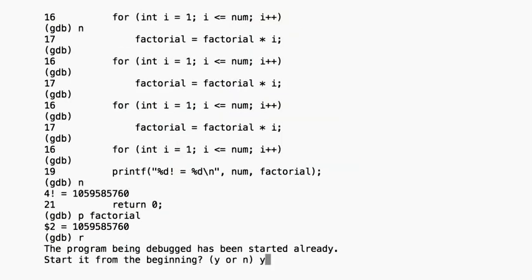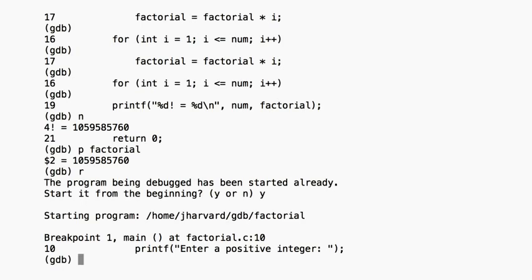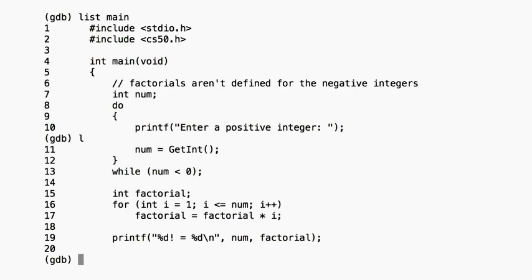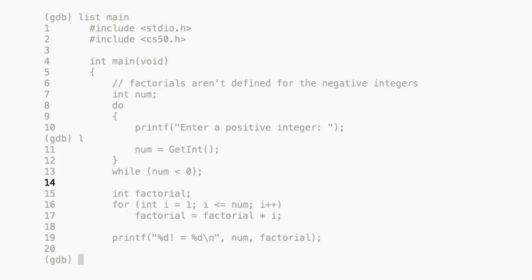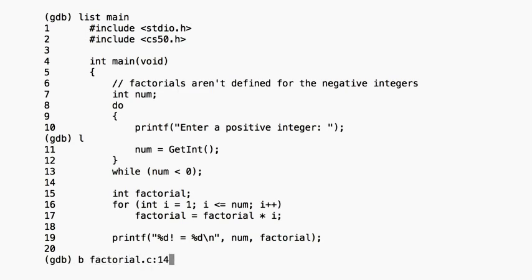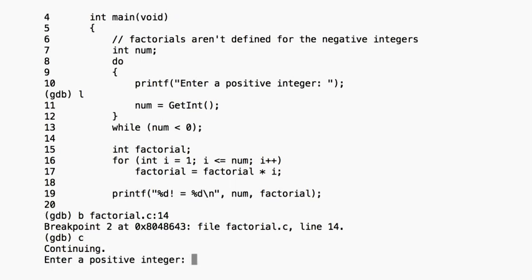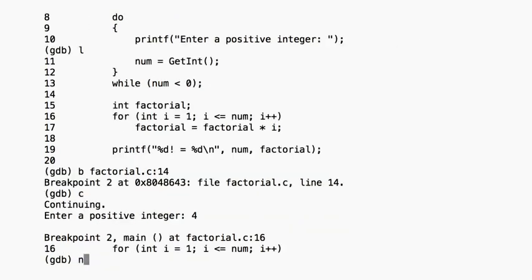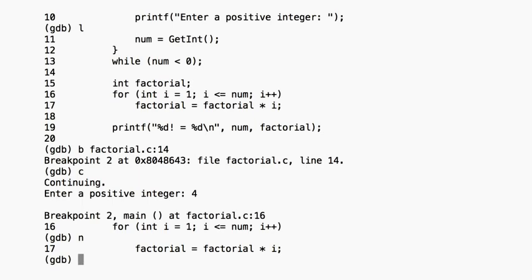At this point we are almost at the end of the program, and it's too late to fix anything. However, we can restart the program by typing r again and then y to confirm. Now we're back at our breakpoint at the beginning of main. We know that everything seems fine with reading in the int, so we can jump ahead. Alternatively, we can set a new breakpoint after the do-while loop and jump there. Looks like line 14 comes just after the loop, so let's set a breakpoint there. It's good practice to specify the file name in this breakpoint command, since GDB can get confused if you're working with multiple files. To move ahead to this breakpoint, we'll use the continue, or c, command.